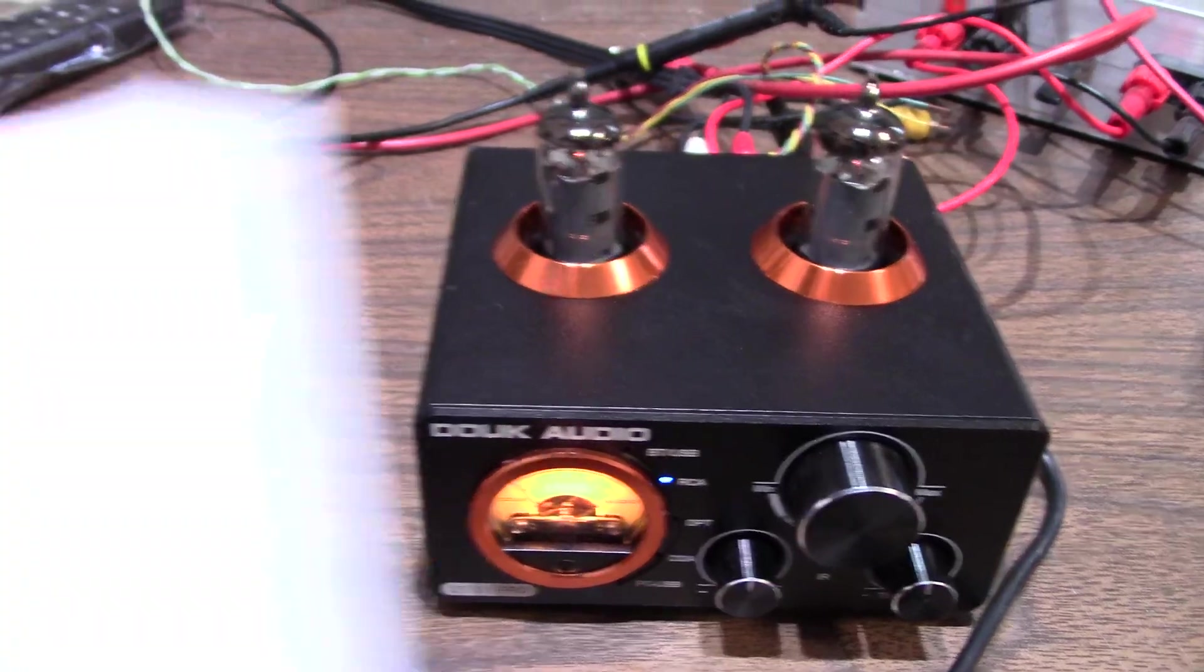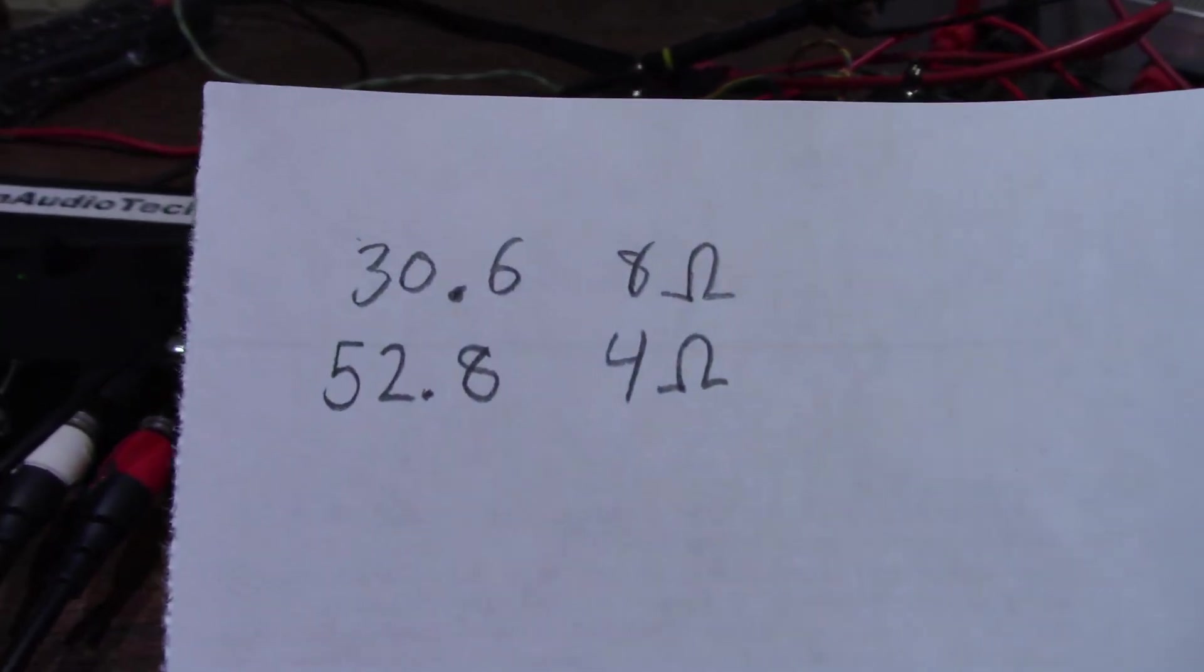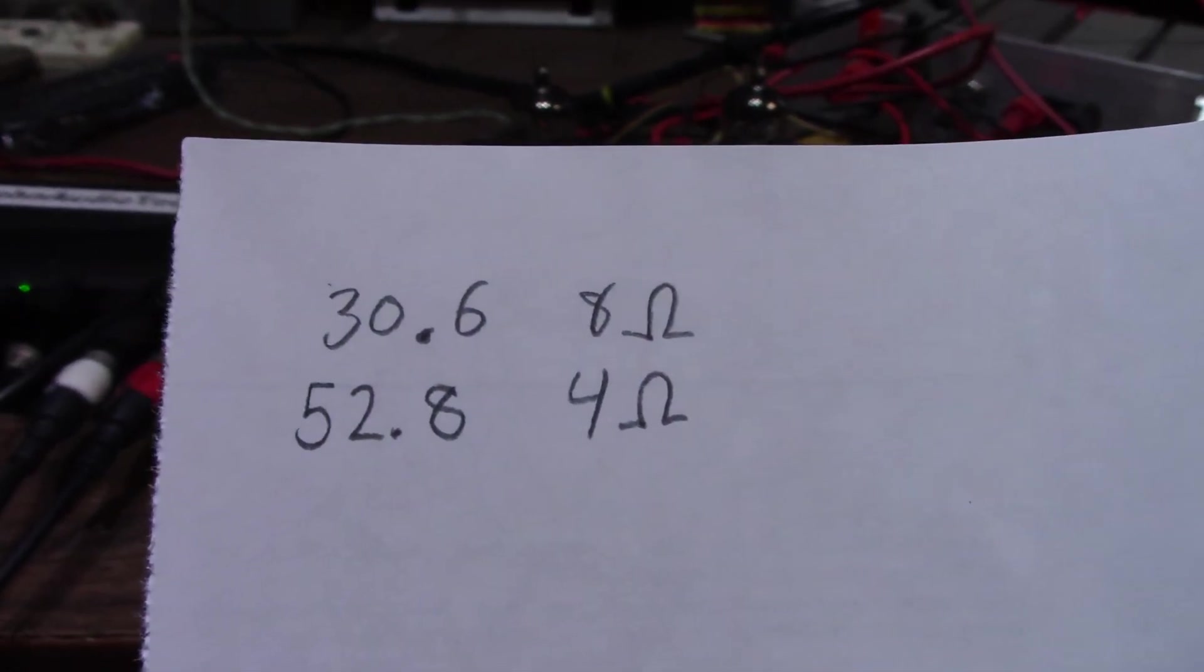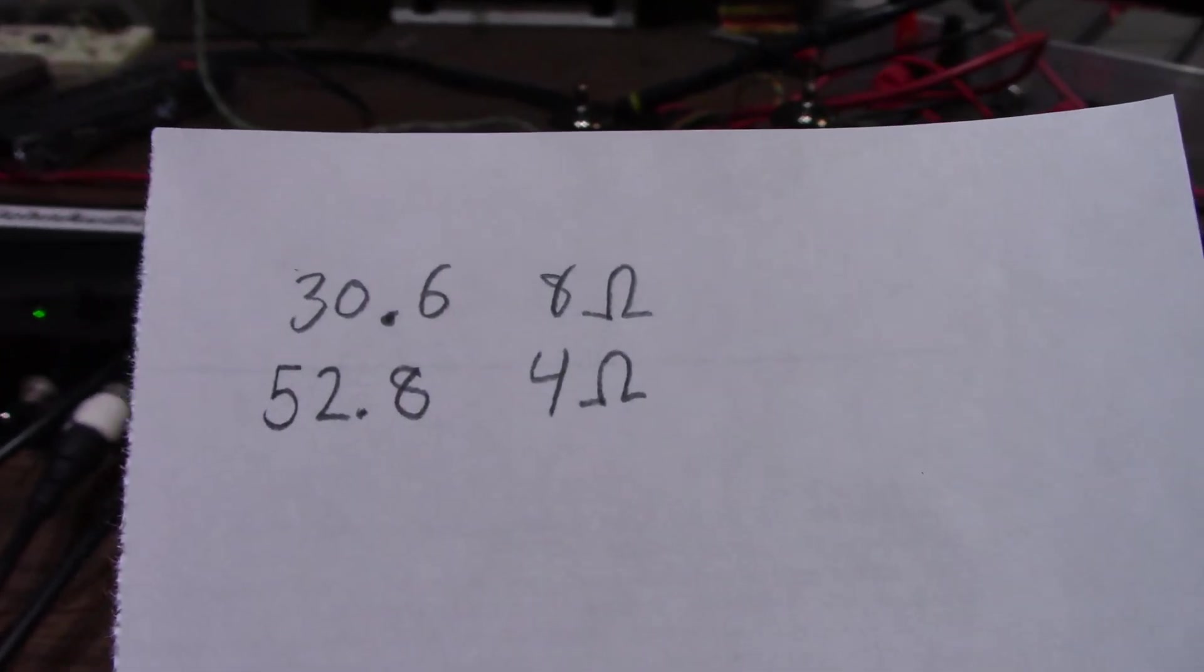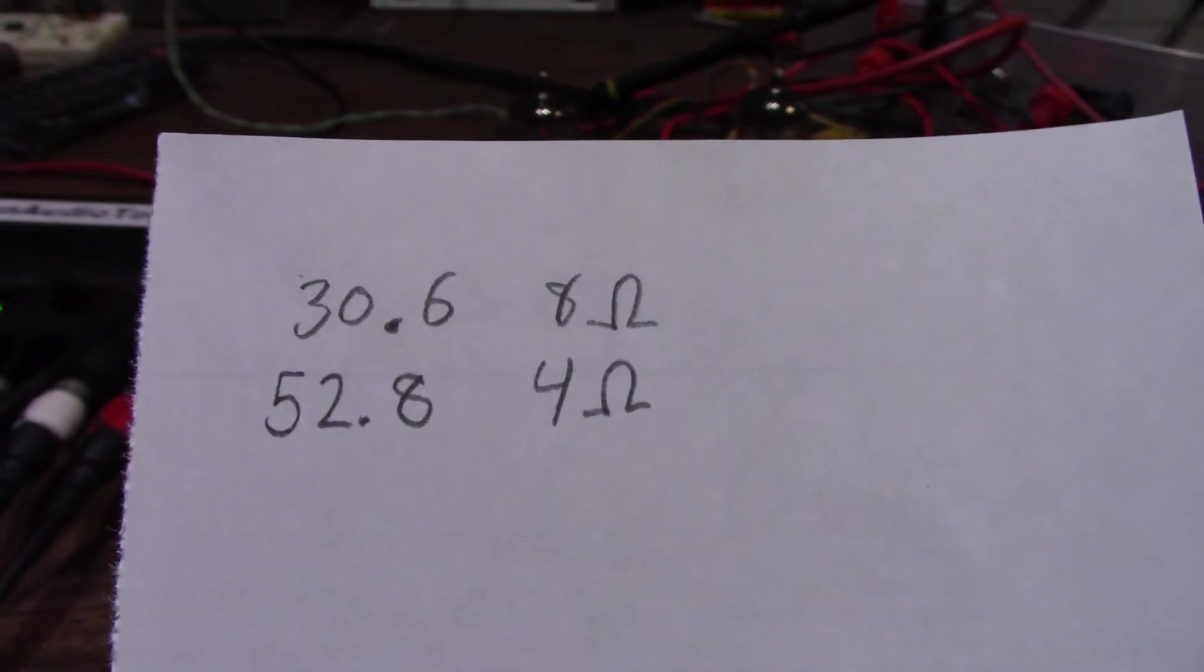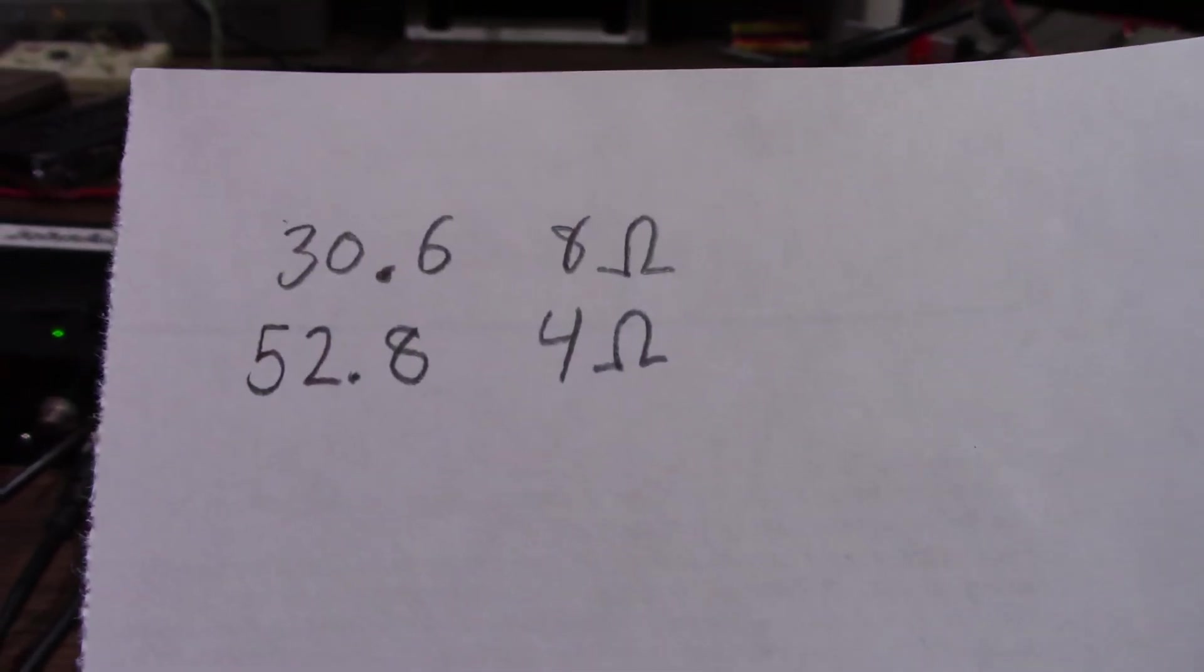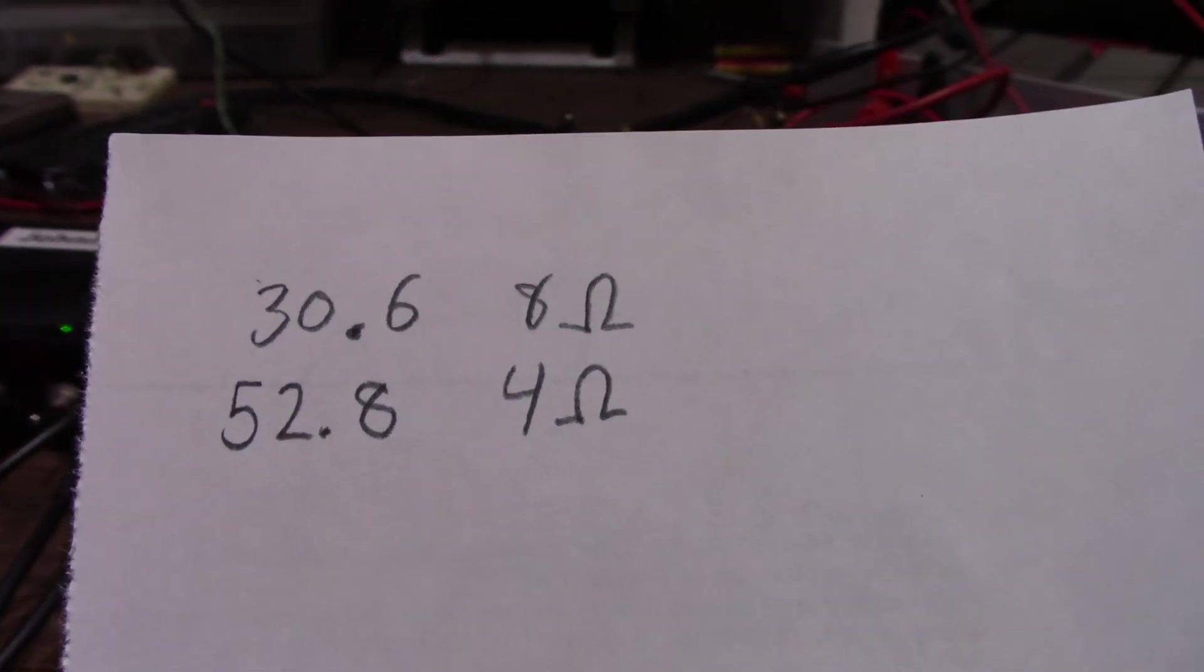I also took the 4-ohm measurement. And completely without surprise to me, if you watch this channel, you know a 24-volt supply, a bridge type output of a Class D amp is going to be around 50 watts. And yeah, that's what we end up with. Just shy of 53 watts into 4 ohms.